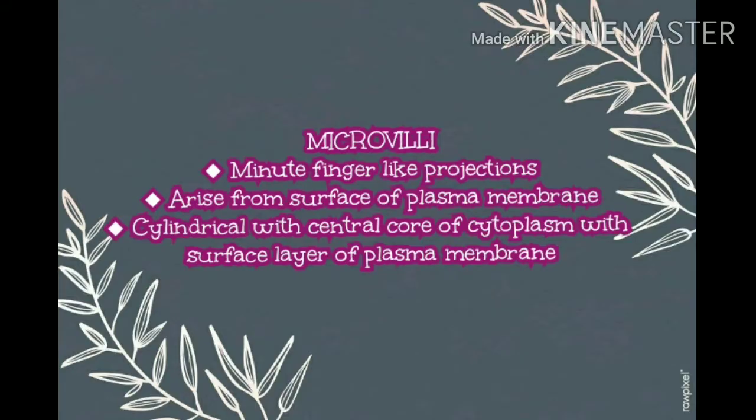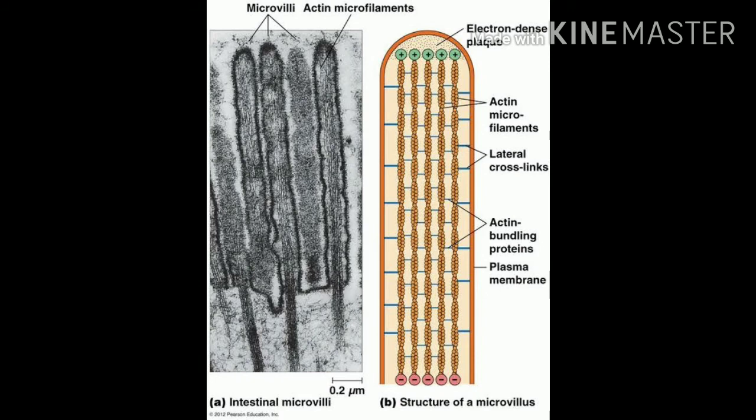The first modification of plasma membrane is microvilli, which is a finger-like cylindrical shaped projection seen on the surface of the plasma membrane. It is also seen in the digestive tract. The major function of microvilli is to increase the surface area. As shown in the picture, it looks like a finger — this is what we call microvilli.